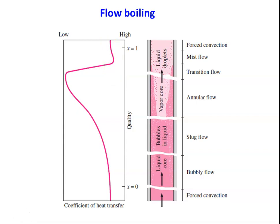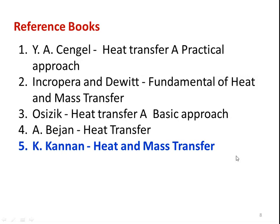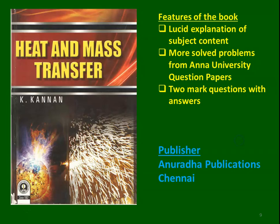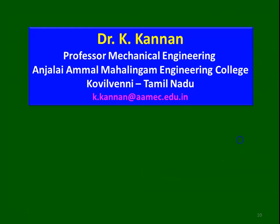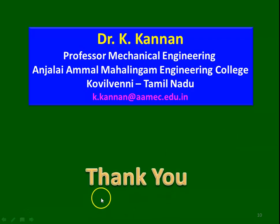In the exam for flow boiling, draw two diagrams and explain the regions: forced convection liquid, bubbly flow, slug flow, annular flow, transition flow, mist flow, and forced convection vapour. These are the reference books used for preparation. I also have a book published on heat and mass transfer by another publication, Chennai. If you have any queries, write to my email ID and I will sincerely answer all your questions. Thank you, we will meet again.